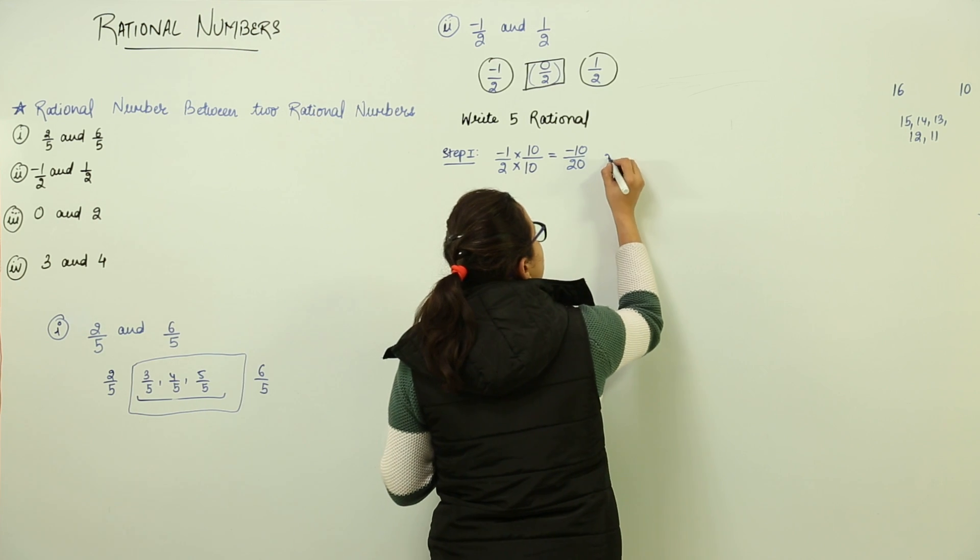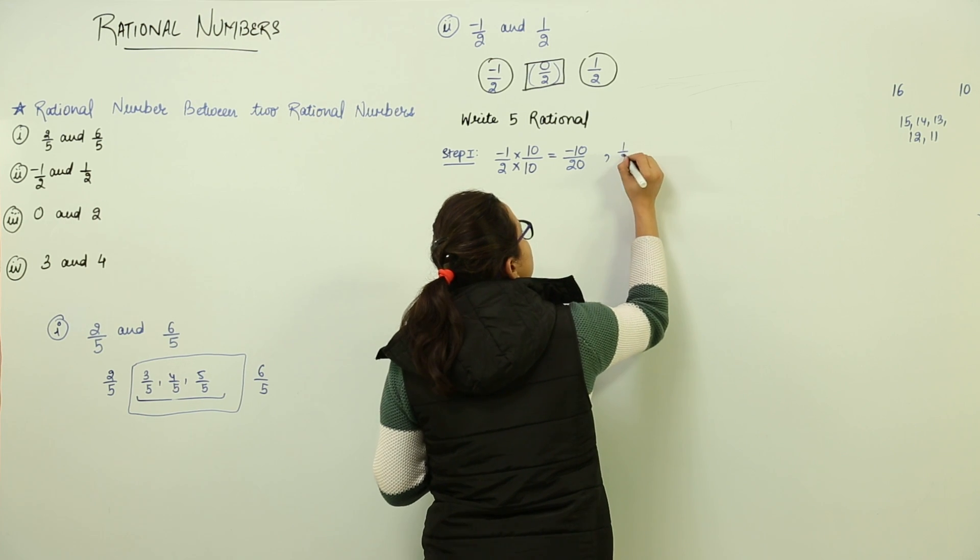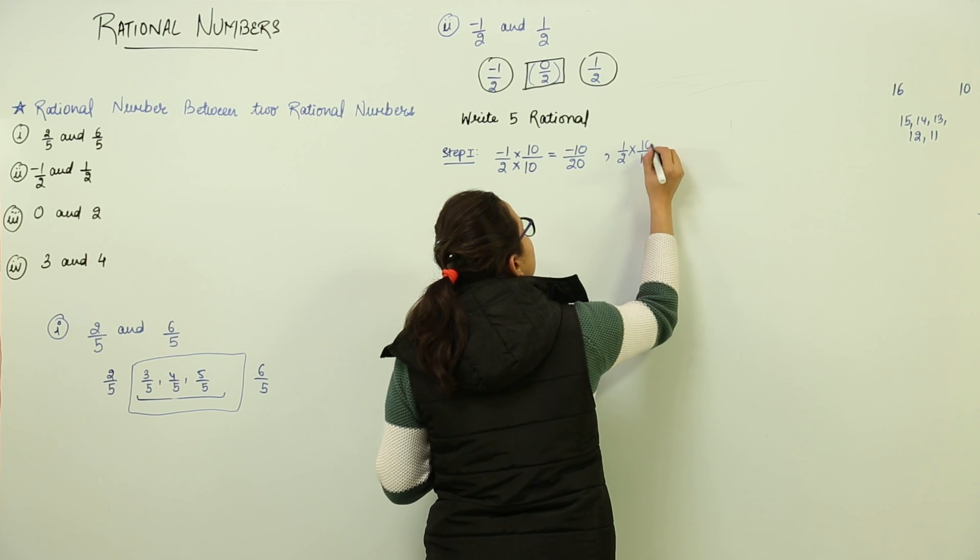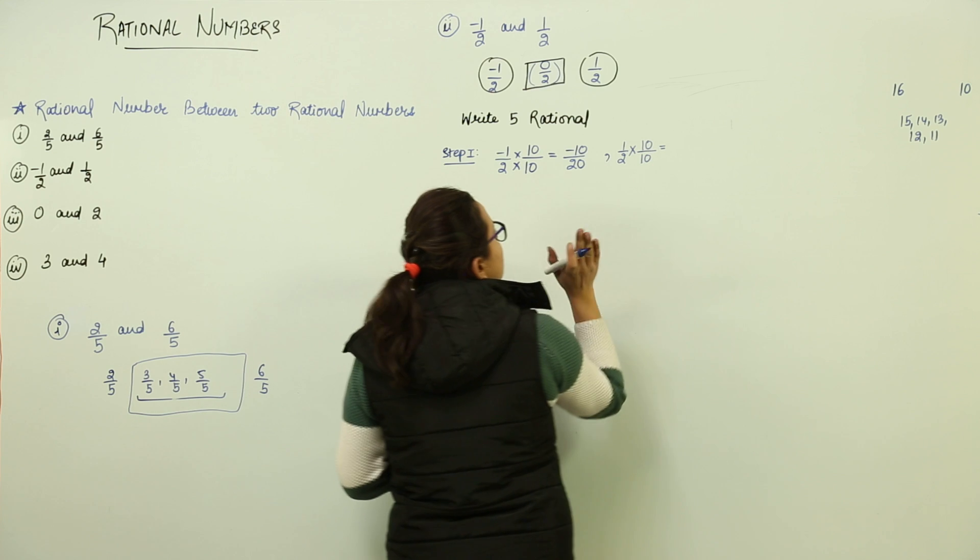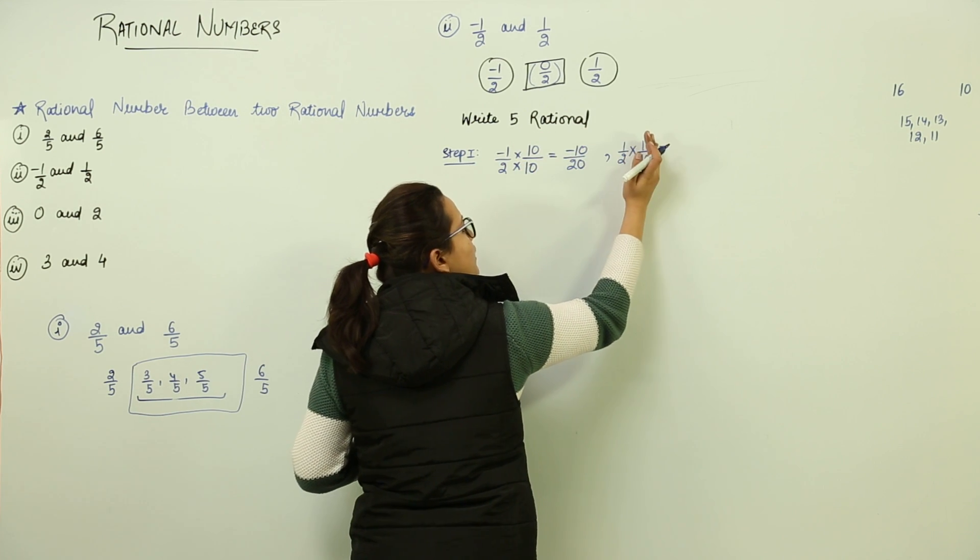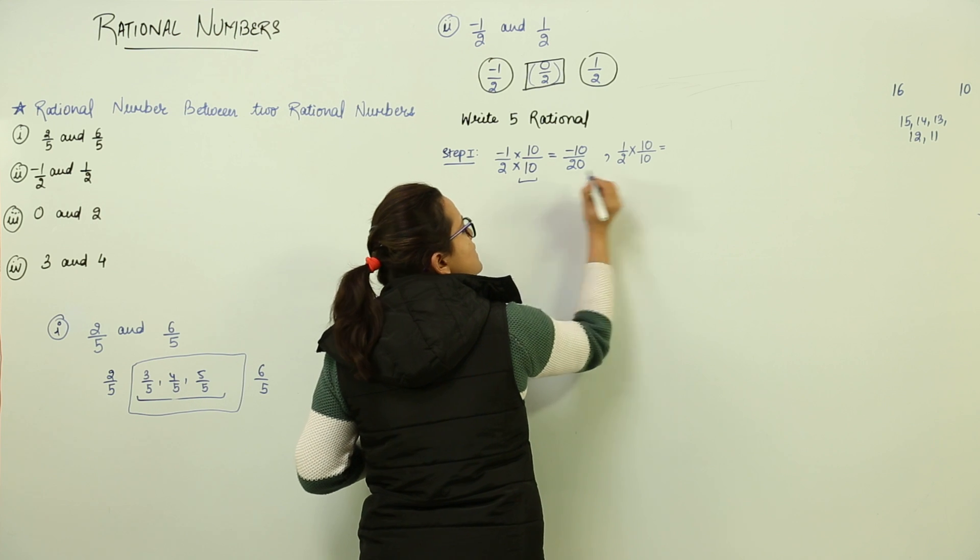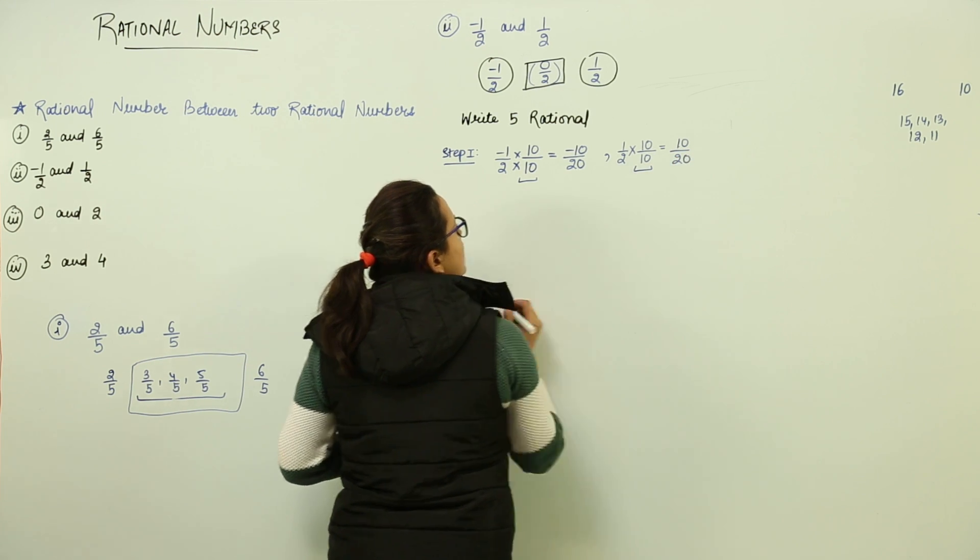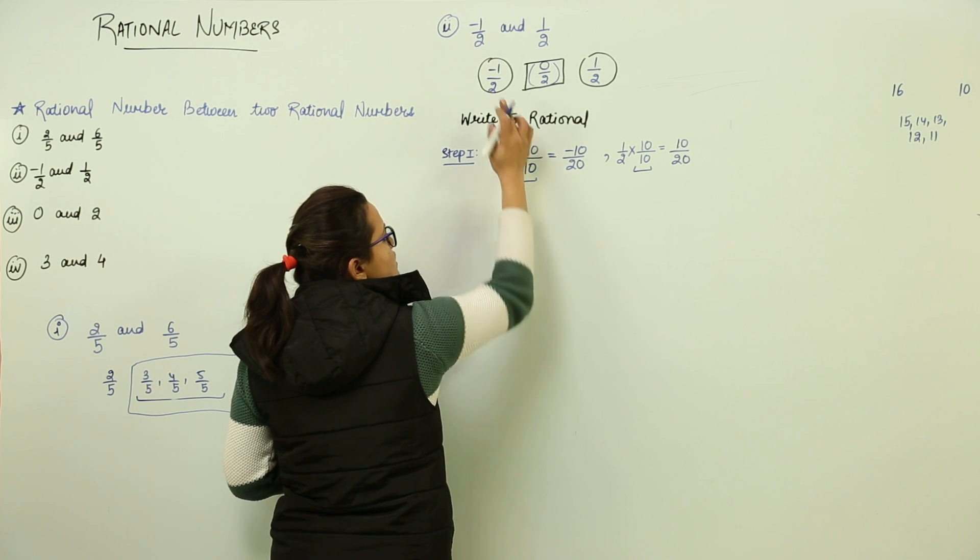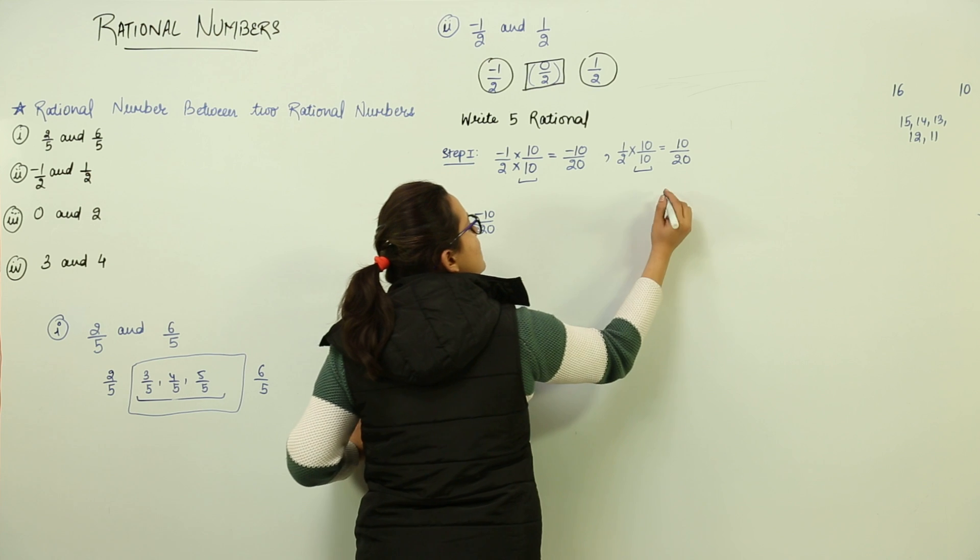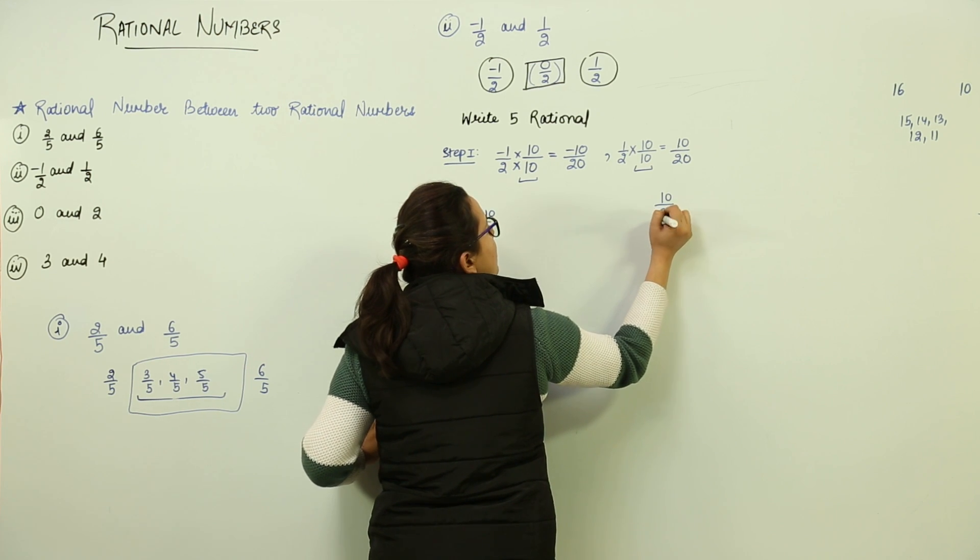Similarly for the next fraction 1 by 2, I multiply this with 10. We will have to multiply both the fractions with the same number. These should be same. So we get 10 over 20. Now this fraction has already become minus 10 by 20 and this fraction is 10 by 20 now.